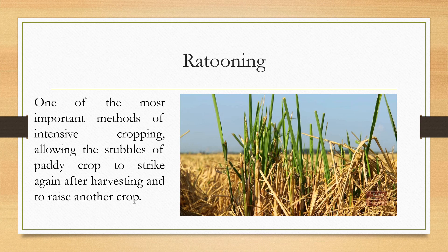Coming to ratooning, which is one of the most intensive cropping systems. Here you can see in the picture that it involves allowing the stubbles of a paddy crop to sprout again after harvesting, in order to raise another crop. This is called ratooning.